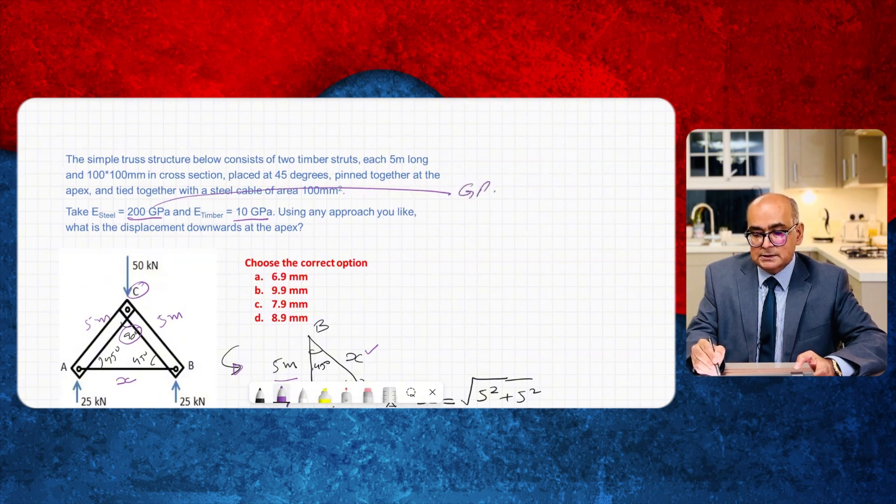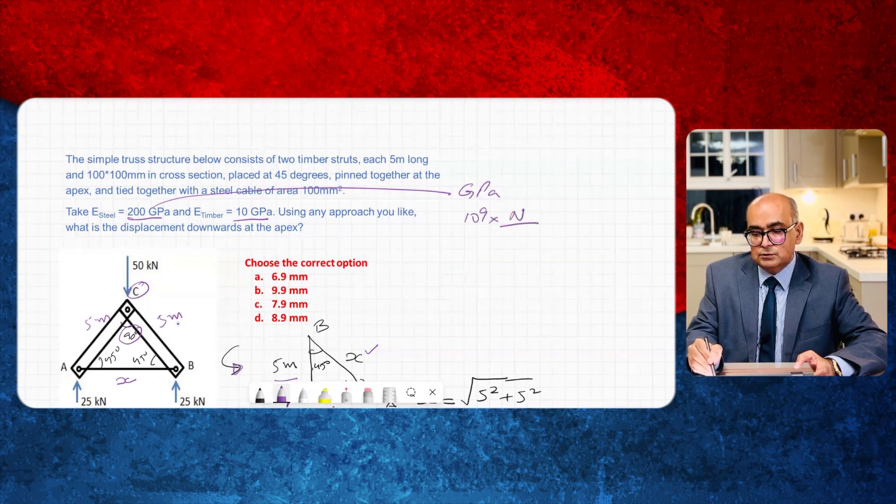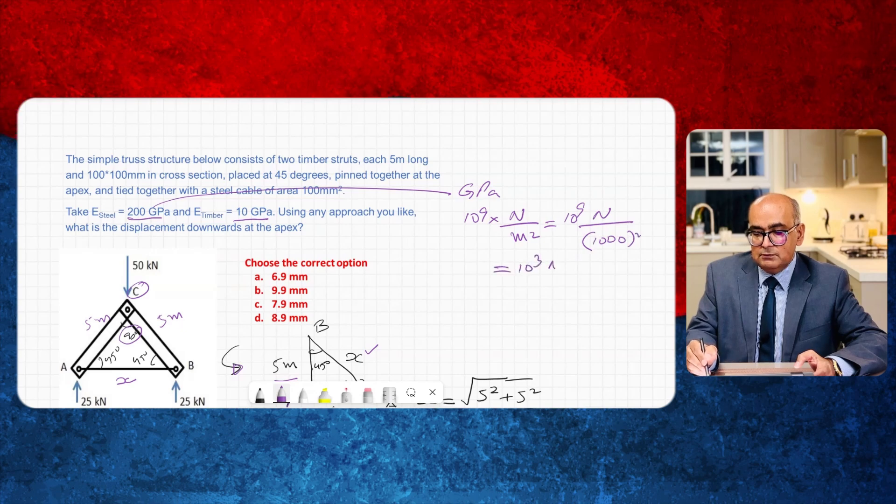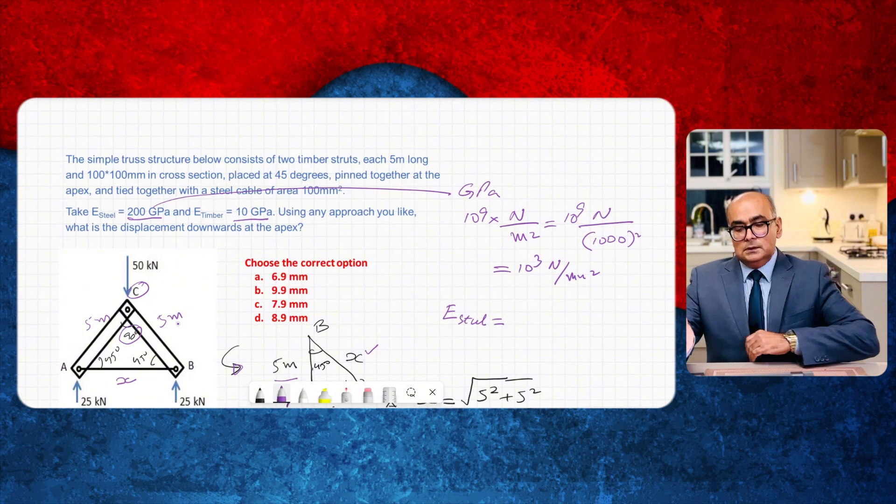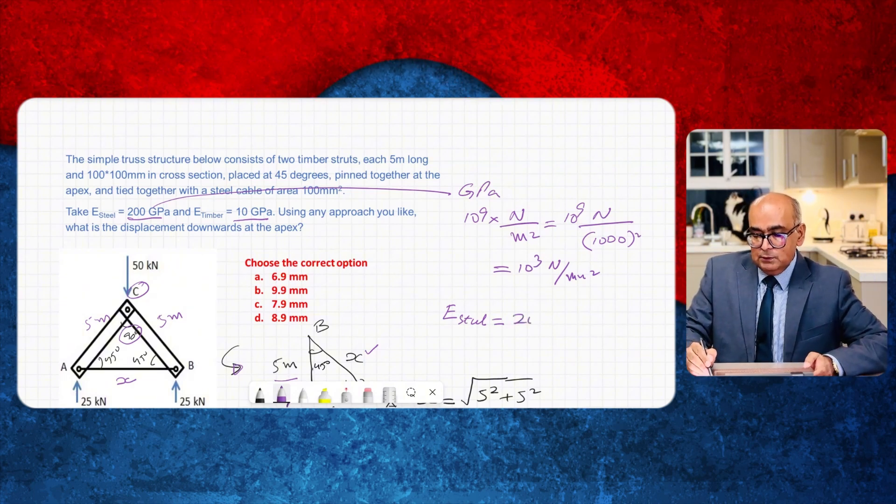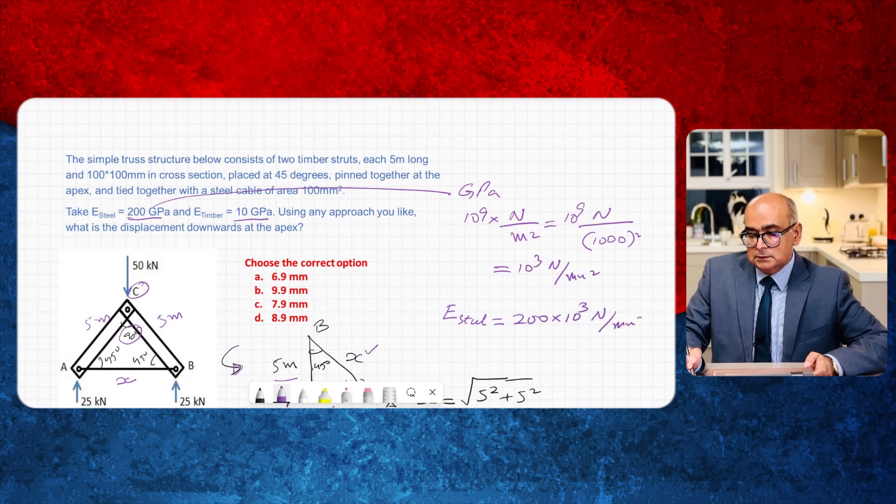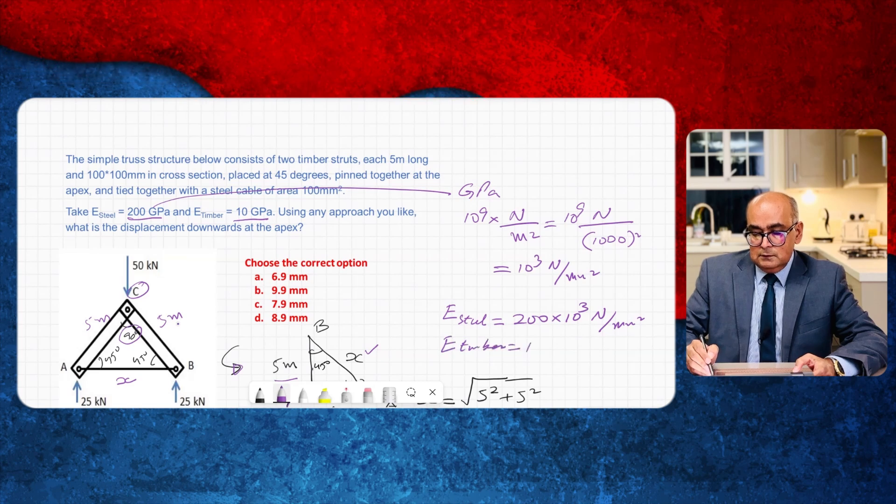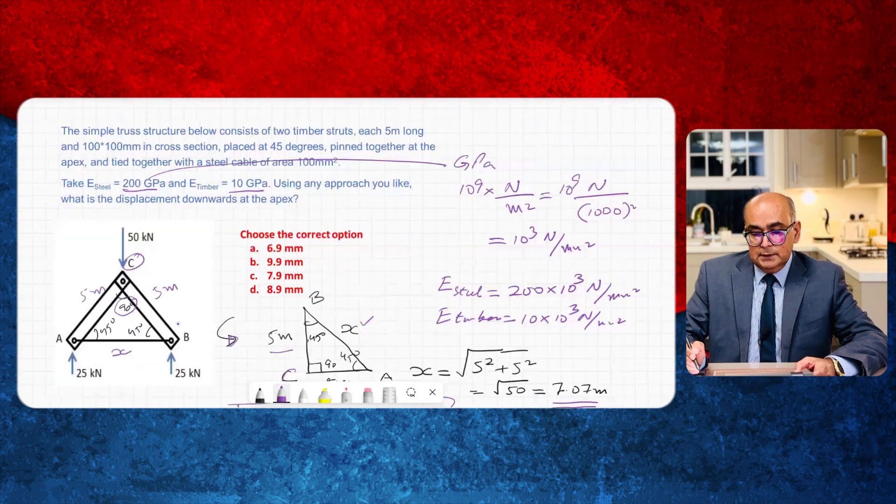So gigapascal GPa means that 10 raised 9 newton per meter square. So it will be 10 raised 9 newton per millimeter square divided by thousand square. So this will be 10 raised 3 newton per millimeter square. E for steel will be equal to 200 times 10 raised 3 newton per millimeter square. E for timber will be equal to 10 into 10 raised 3 newton per millimeter square.